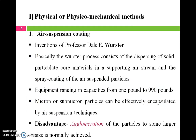The first physical method is air suspension coating. This method was invented by Professor Dale Wurster. The Wurster process involves dispersing solid, air-suspended particulate core material in a supporting air stream and spray-coating the air-suspended particles. Equipment ranging in capacities from one pound to 990 pounds can be used, and micron or sub-micron particles can be effectively encapsulated. The main disadvantages are the possibility of agglomeration during coating, resulting in larger particles, and that only solid materials can be coated.